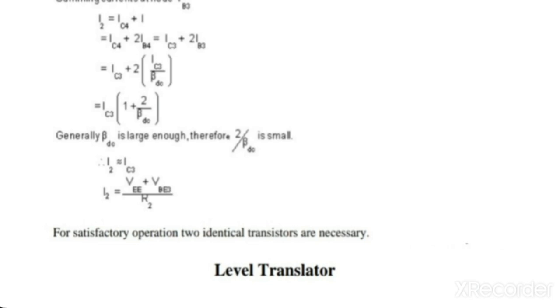I2 is equal to IC3 times 1 plus 2 by beta dc. We know that beta dc is generally very large, therefore 2 upon beta dc is very small, and hence I2 can be written as I2 is equal to IC3.